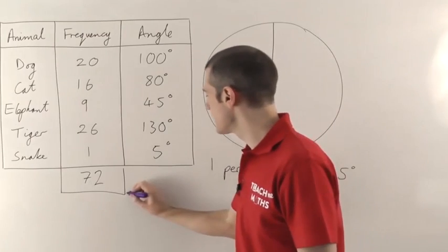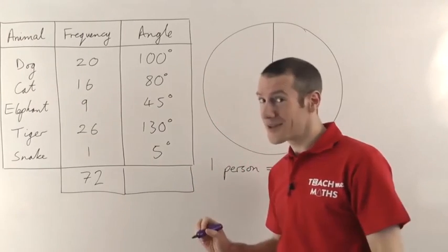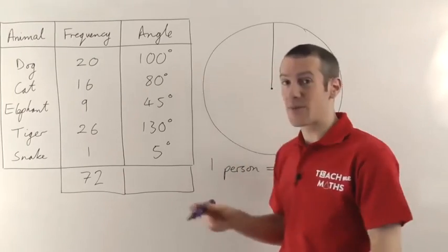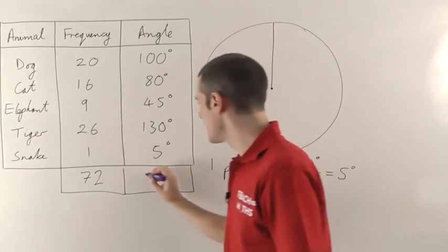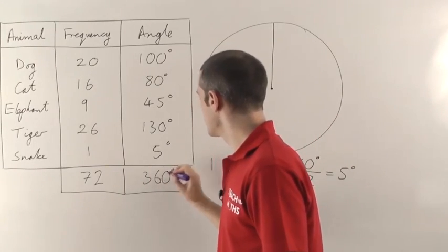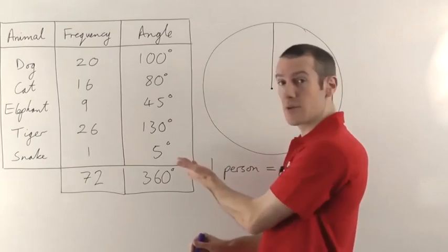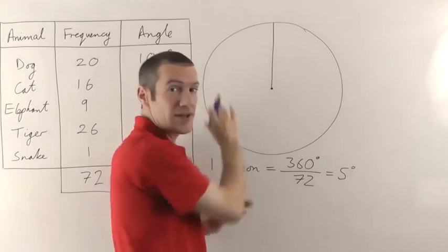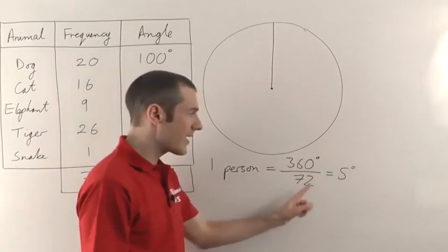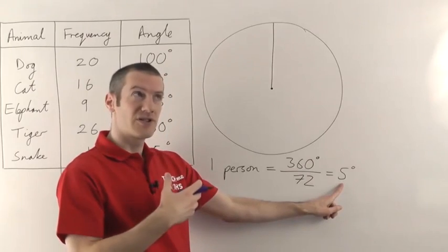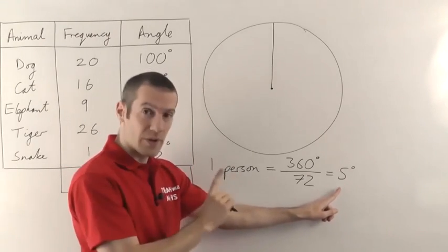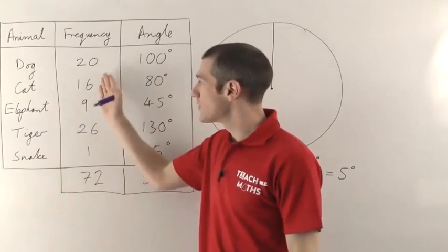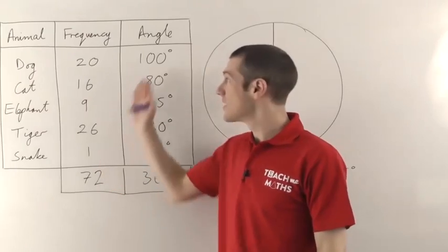Now one little check here to make sure you've done it right, is if you add up all the angles, you should get 360 degrees because it's got to fill the whole pie chart. You can't have a little gap with something missing. And if you add those up, I think you do get 360 degrees. So that's how you work out the angles. So just to stress again, you take 360, the angle for the whole pie chart, divide it by the number of people, and that tells you how much of an angle, how many degrees, you need for one person in your frequency table. And then that much, in this case the 5 degrees, you just multiply by each of the different frequencies to give you the angles.